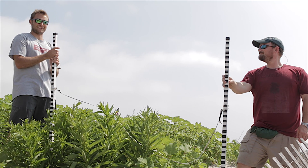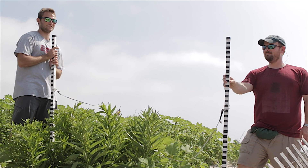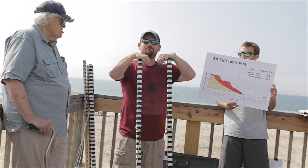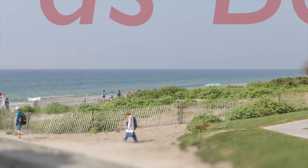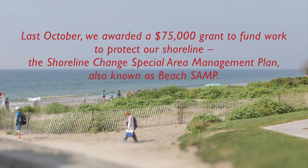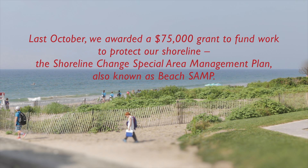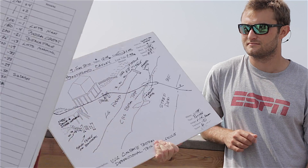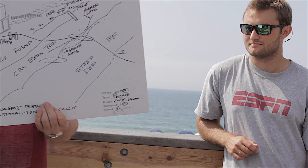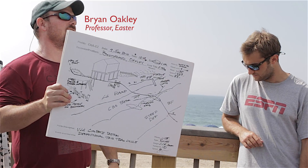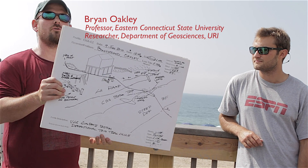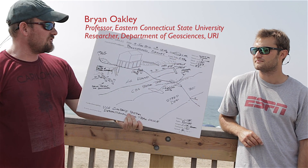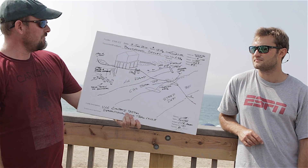We use a method called the modified Emory method, locally called two sticks and a string. We're going to go out with a data sheet. We also take a sketch of the beach. It's pretty easy to just snip, snip, snip — take a few photos. But this actually makes you think about what the beach looked like.